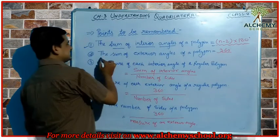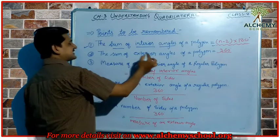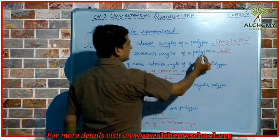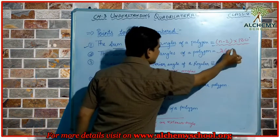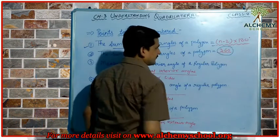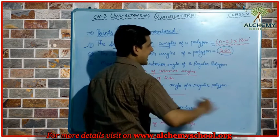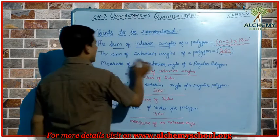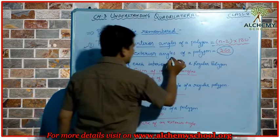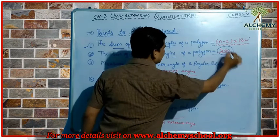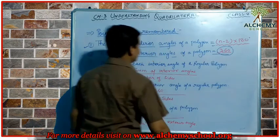Next, the sum of exterior angles of a polygon is always 360 degrees. For any and every polygon, the sum of exterior angles will always be 360 degrees.